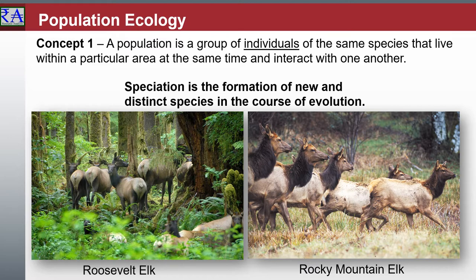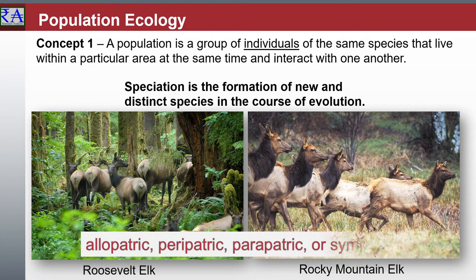He also identified sexual selection as a likely but problematic mechanism. There are four geographic modes of speciation in nature, based on the extent to which speciating populations are isolated from one another: allopatric, peripatric, parapatric, and sympatric.